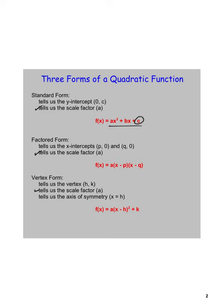The factored form can tell us those x-intercepts based on what makes each factor equal zero. And then the vertex form can help us determine where the vertex is, which allows us to then find the axis of symmetry. We're at our three forms, and you want to keep these near. We'll use all three — they all have their own value in terms of finding specific elements of a quadratic.